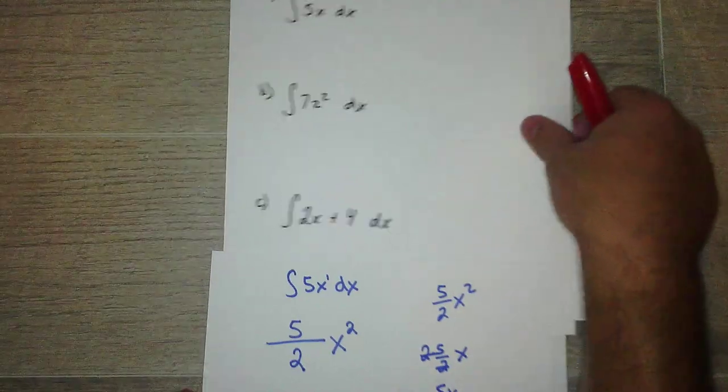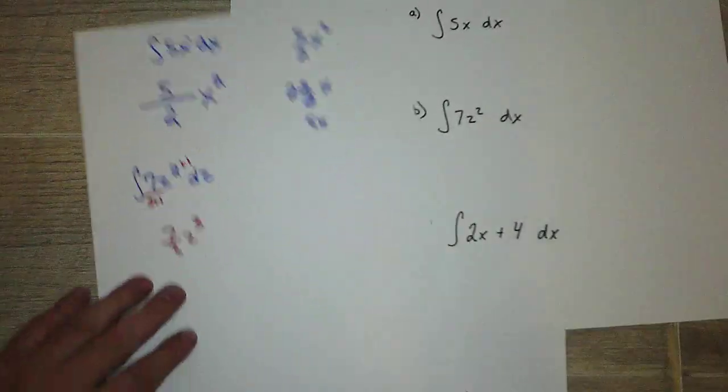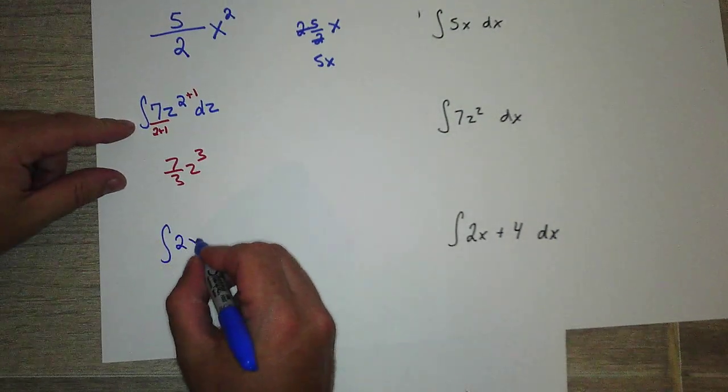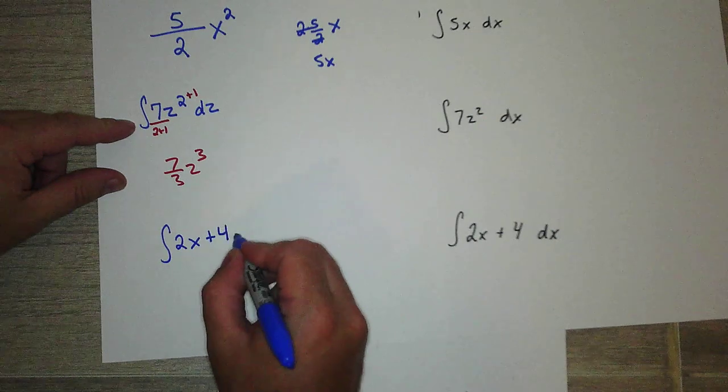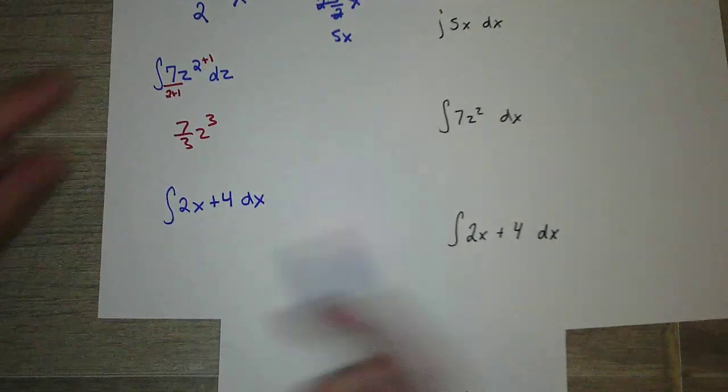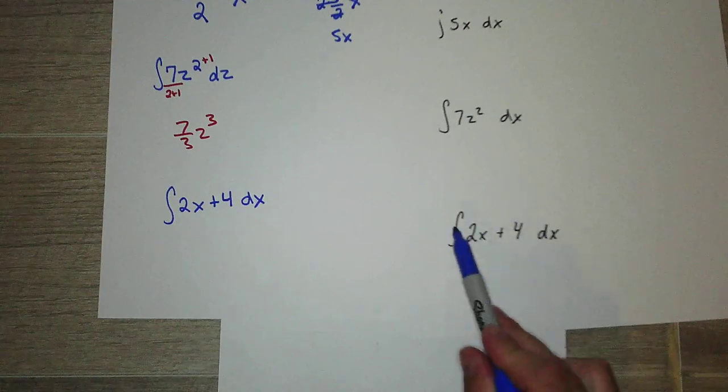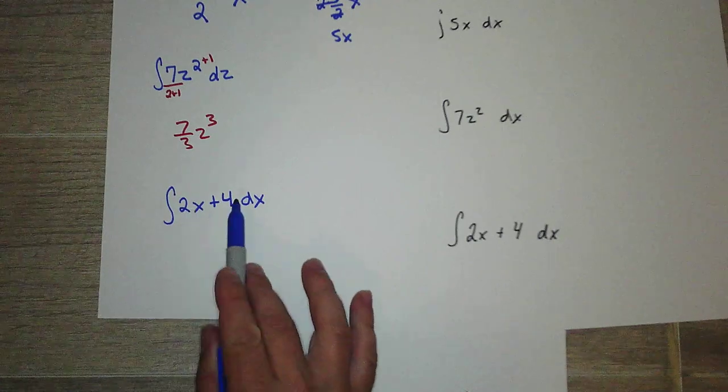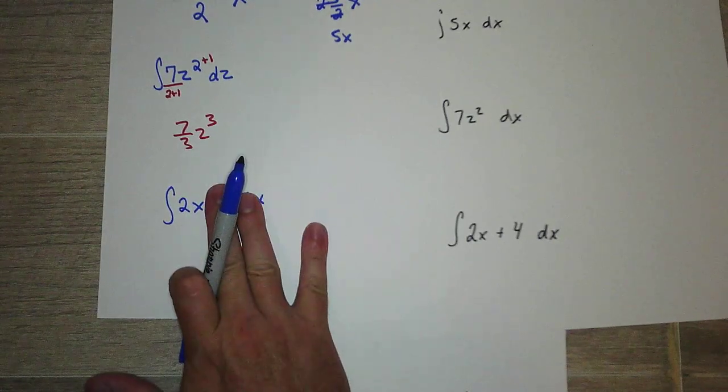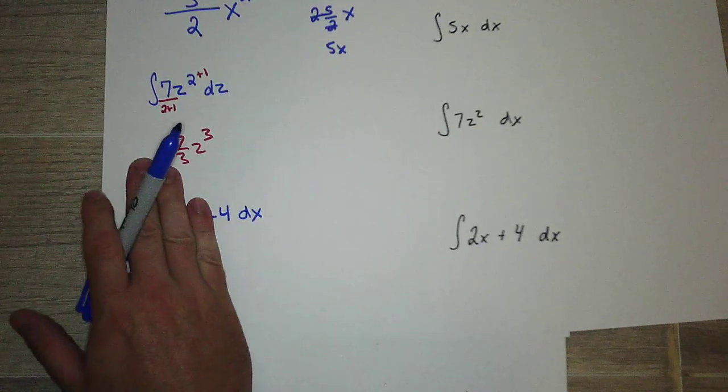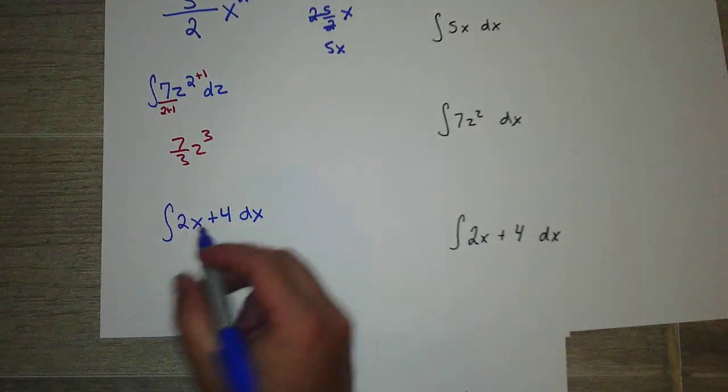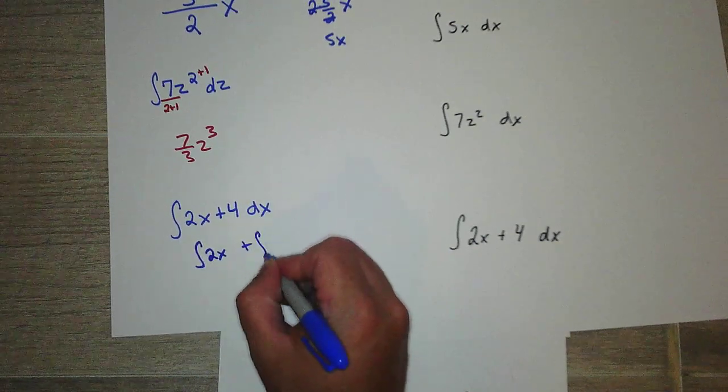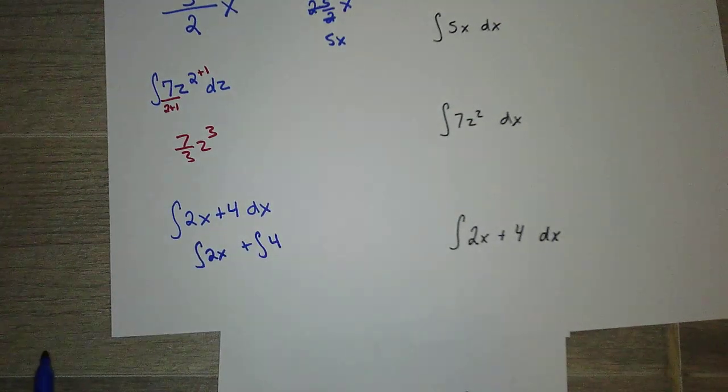Integration of 2x plus 4. I'm going to rewrite it here. Integration of 2x plus 4 with respect to x. Just like when you're doing derivatives and you have two terms, you do the derivative of each term separately. Same thing for integration. No matter how many terms you have, you just integrate each term separately. So just integrate 2x plus, and then whatever integration of 4 is.